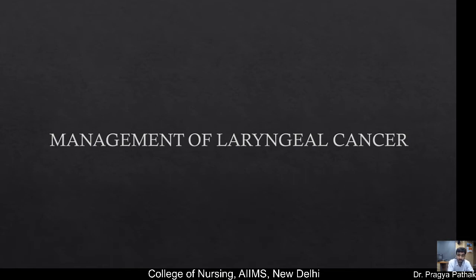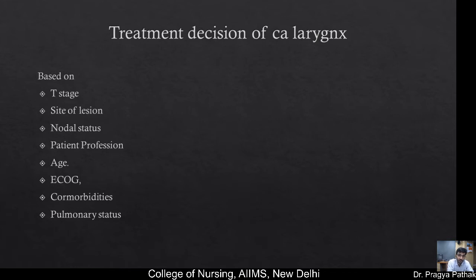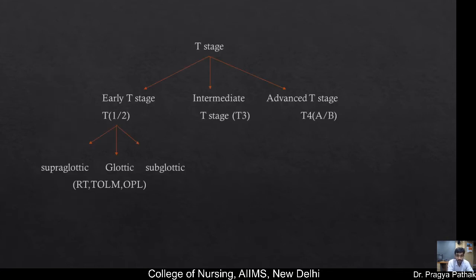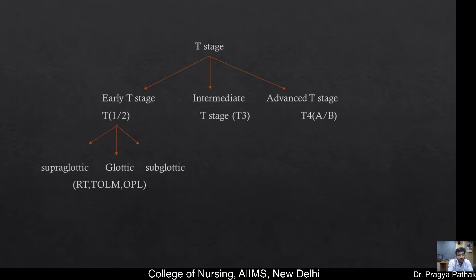Management of laryngeal cancer: treatment decisions are based on T-staging, site of lesion, nodal status, patient's profession, age, ECOG status, comorbidities, and pulmonary status. Early T-stage (T1, T2), intermediate (T3), and advanced (T4A and T4B). For early T-stage supraglottic, glottic, and subglottic tumours, options include radiotherapy, transoral laser microsurgery, or open partial laryngectomy. For early T-stage glottic cancer T1, local control is best achieved: transoral laser resection achieves 92% and vertical partial laryngectomy 96% with anterior commissure-free involvement. With anterior commissure involvement, both transoral laser resection and radiotherapy have very good local control.